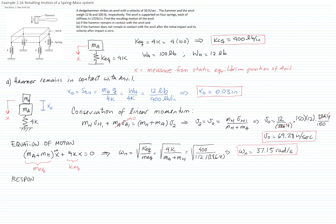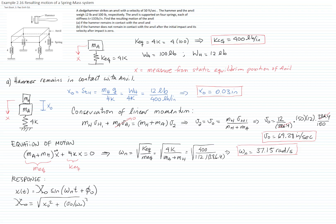Now let's find the response of the system. There are several ways to write the response: as a single sine, as a simple cosine, or as a sum of sine and cosine. I'm going to write it as a single sine with a phase angle. The magnitude equals the square root of the initial displacement squared plus velocity over omega-n, all squared. Since we already calculated those values, plugging in the numbers divided by 37.50 squared, that gives a magnitude value of 1.73 inches.